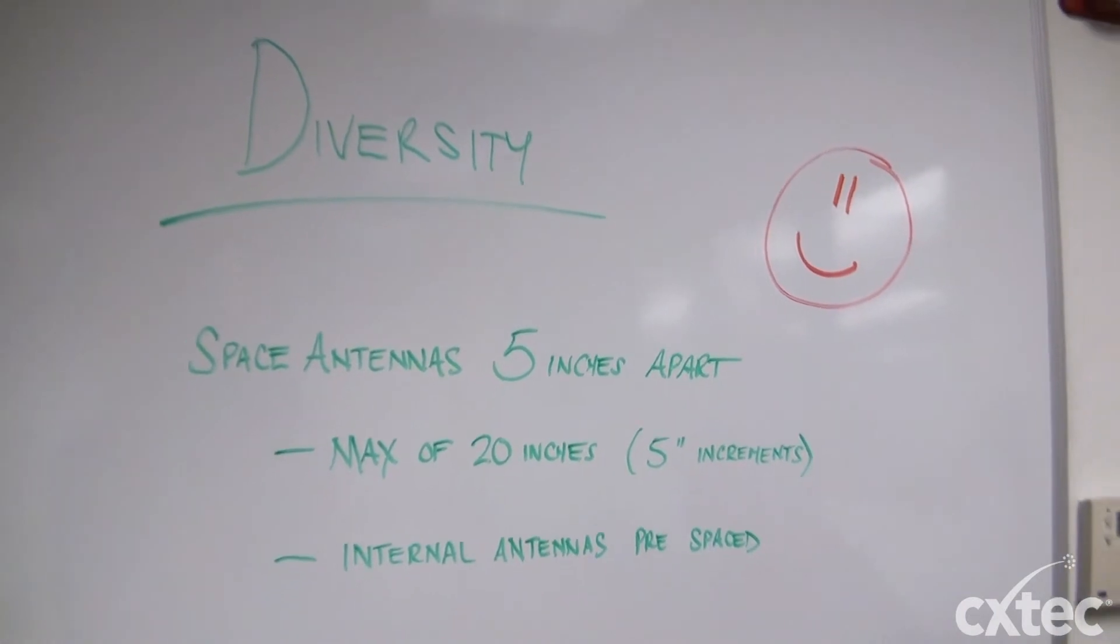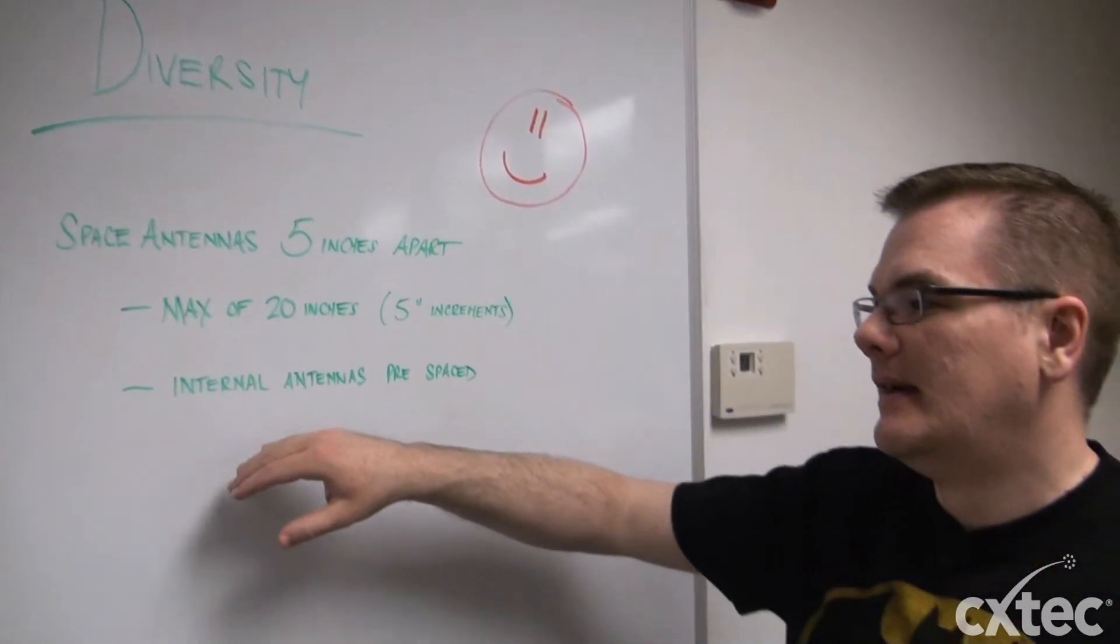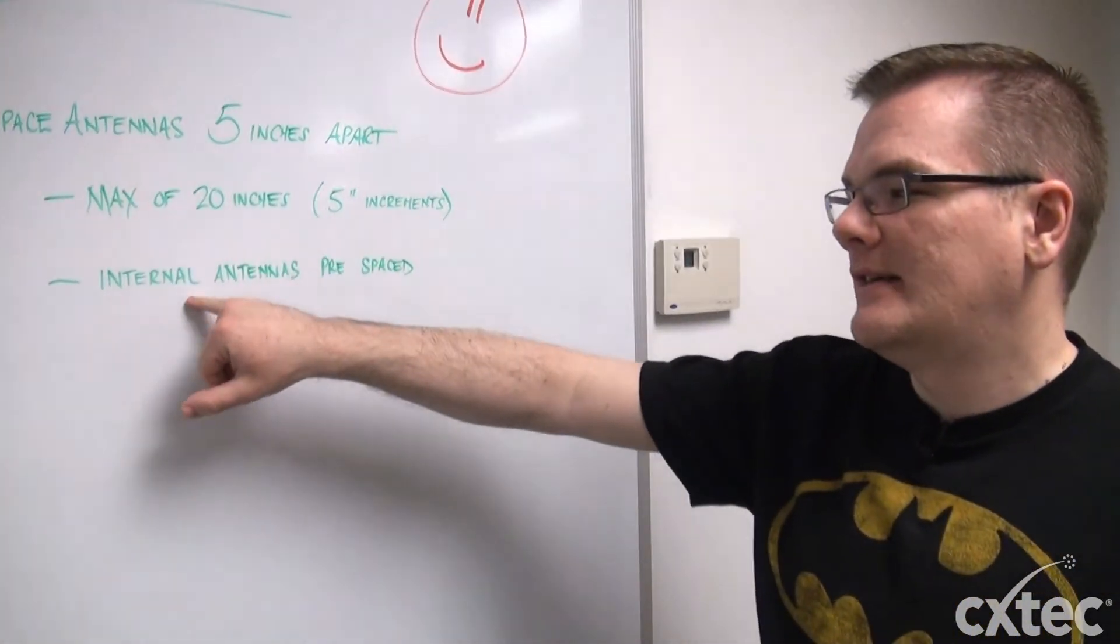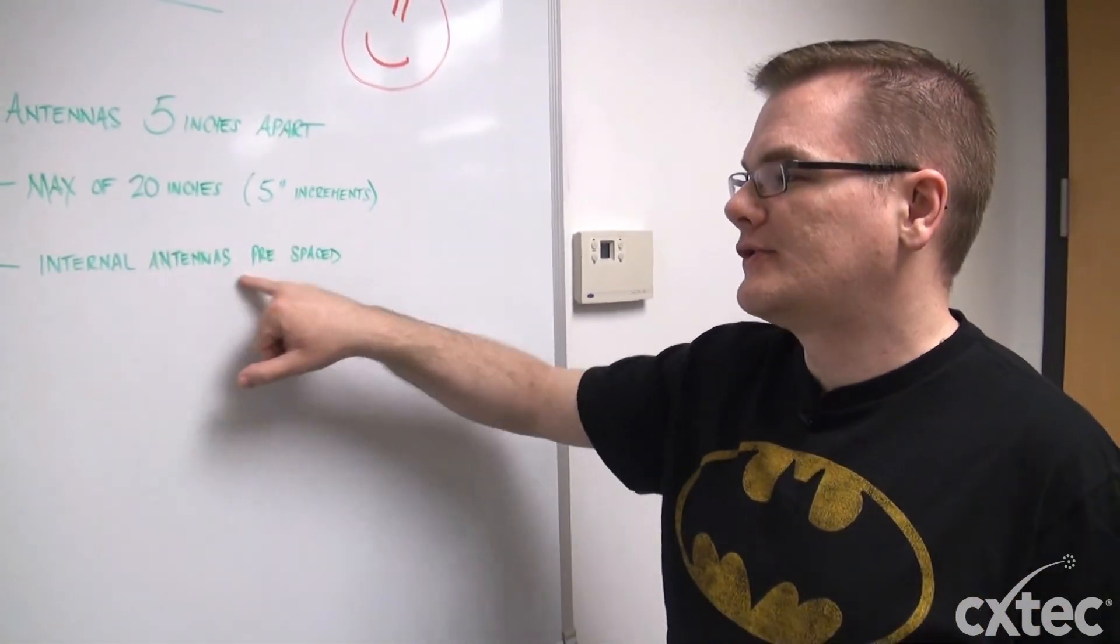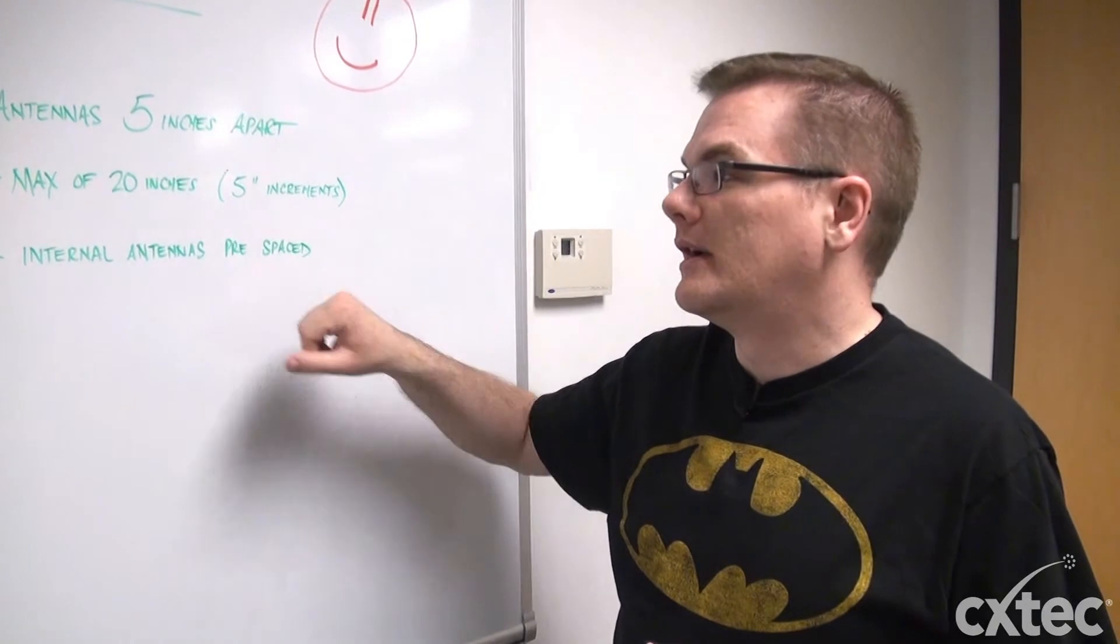So sticking them in two different rooms obviously is not going to be an option. Also, your internal antennas on your access points like your 1142s or 1131s, those are already pre-spaced, so you don't have to worry about those.